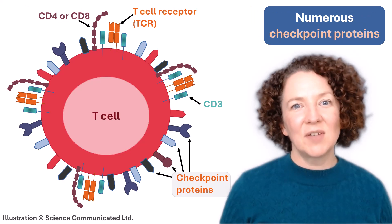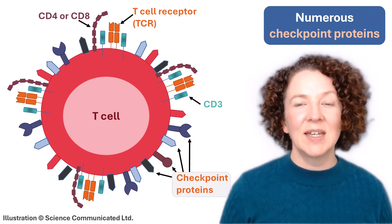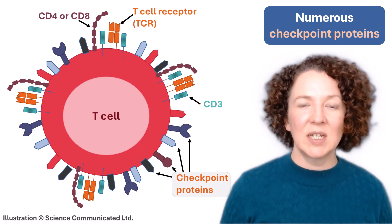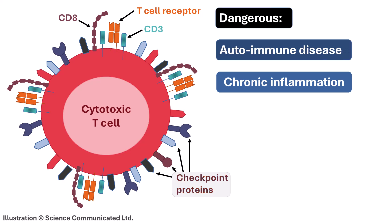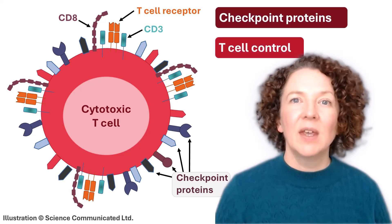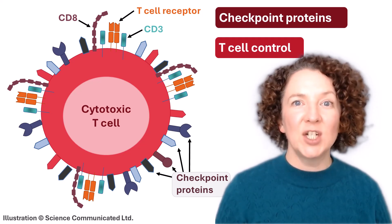T cells also have lots of checkpoint proteins on their surface which help control how they behave. This is important because cytotoxic T cells are extremely powerful. They are excellent at killing virus-infected cells and cancer cells, but they're also dangerous. If the wrong ones become active, they might cause an autoimmune disease. You want them to do their job and then stop and ideally go away or die when they're finished. If they don't, they're going to cause chronic inflammation.